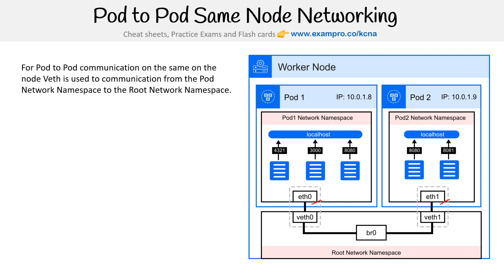You can name virtual Ethernet devices whatever you want. Some people simplify by calling them EF0 and EF0 on the other side, but they could be named one and two — anything works. This is all done for you automatically; you don't set this up manually, it just happens. I'm just mentioning that if you were to set up a veth pair yourself, you can name it whatever you want.